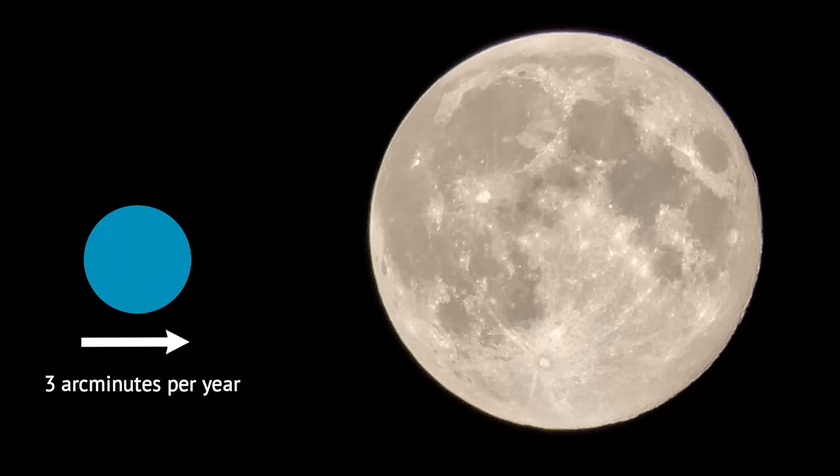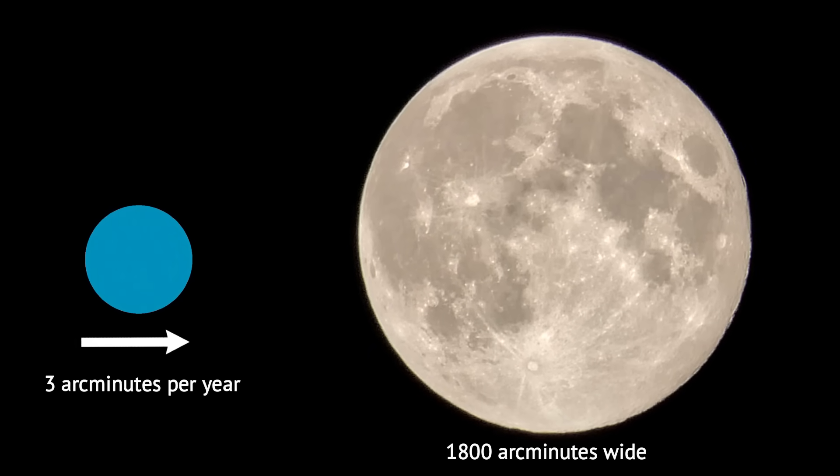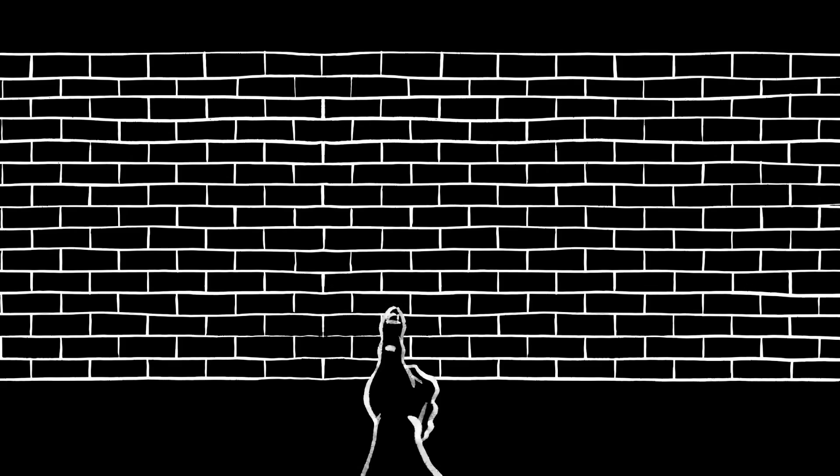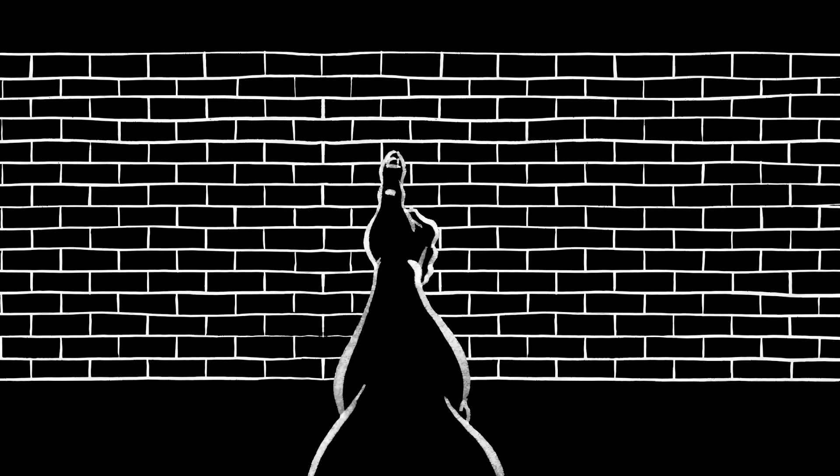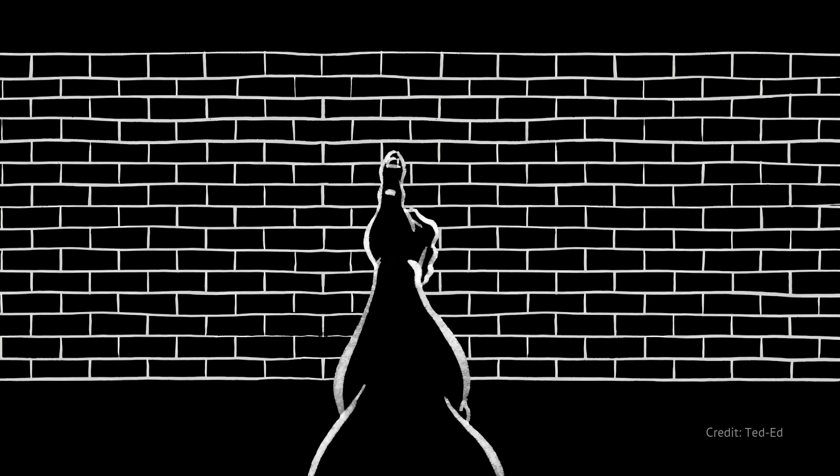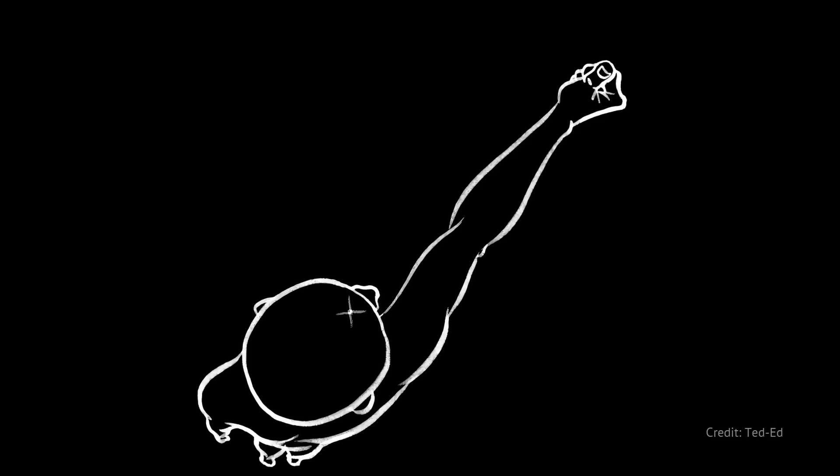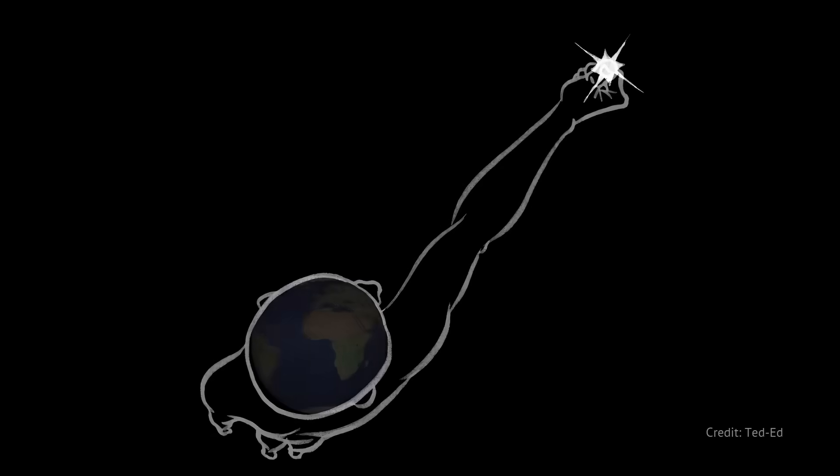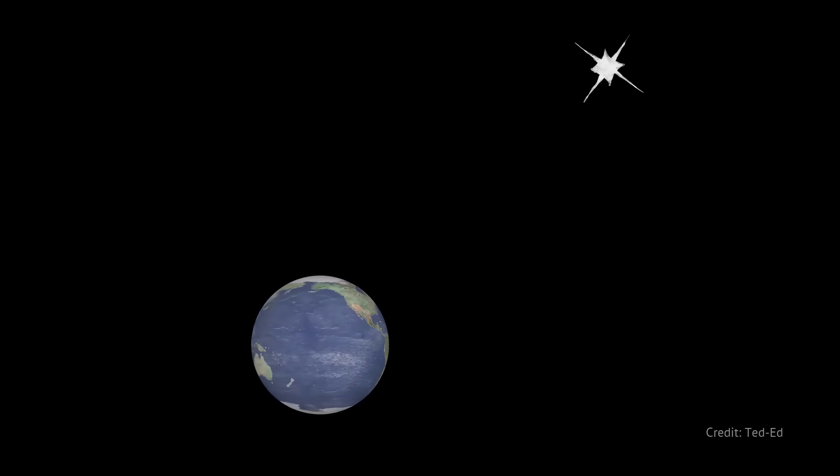To put that in perspective, the full moon is about 1800 arc minutes wide. So how do you even spot something like that? That's where parallax comes in. You know when you hold a finger in front of your face, close one eye, then switch to the other, and your finger seems to jump sideways. That is parallax. In space, we use Earth's orbit around the Sun to create the same effect. By observing the sky from different points in Earth's orbit, astronomers can detect slight shifts in the position of distant objects. And with enough time, you can use those shifts to estimate how far away something is, and whether it's moving.